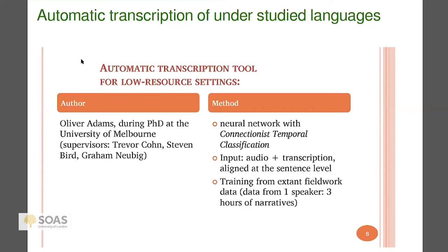Oliver Adams did his PhD at the University of Melbourne and now works at a commercial NLP company. He's using neural networks, which have really taken over artificial intelligence research agendas. The input is audio and transcription aligned at the sentence level, and you need to train a model for the language. For English you just buy an iPhone, turn it on, start talking to it. But we're starting from nothing, working on low-resource languages.